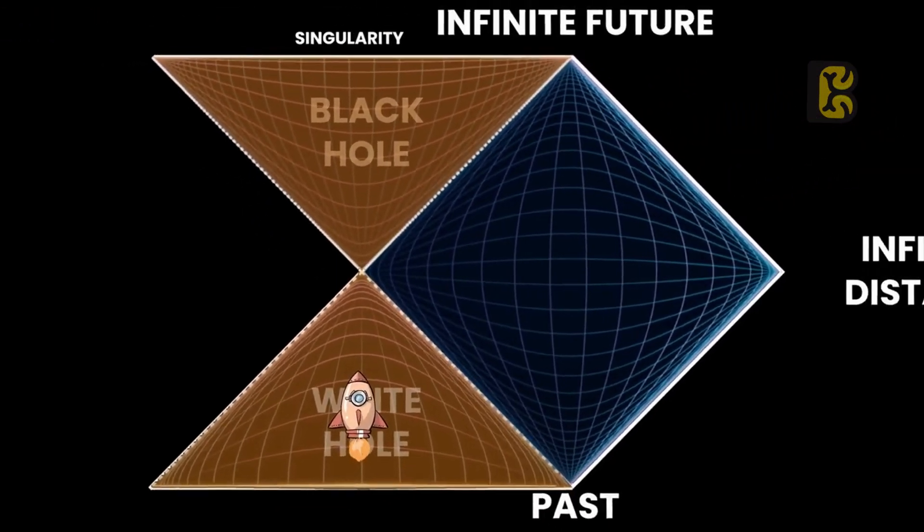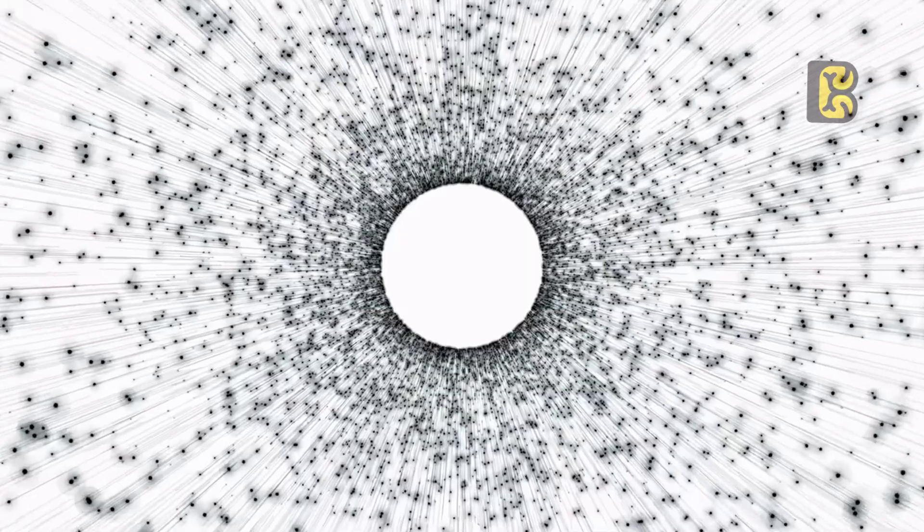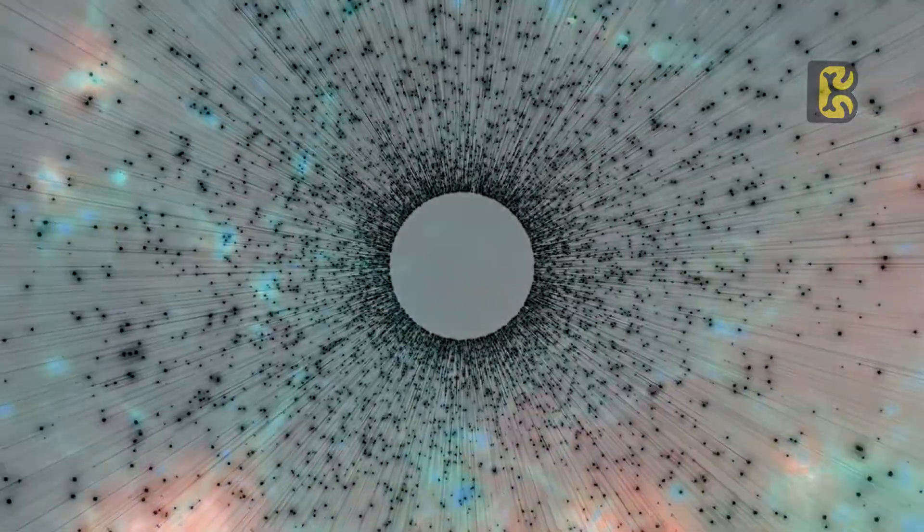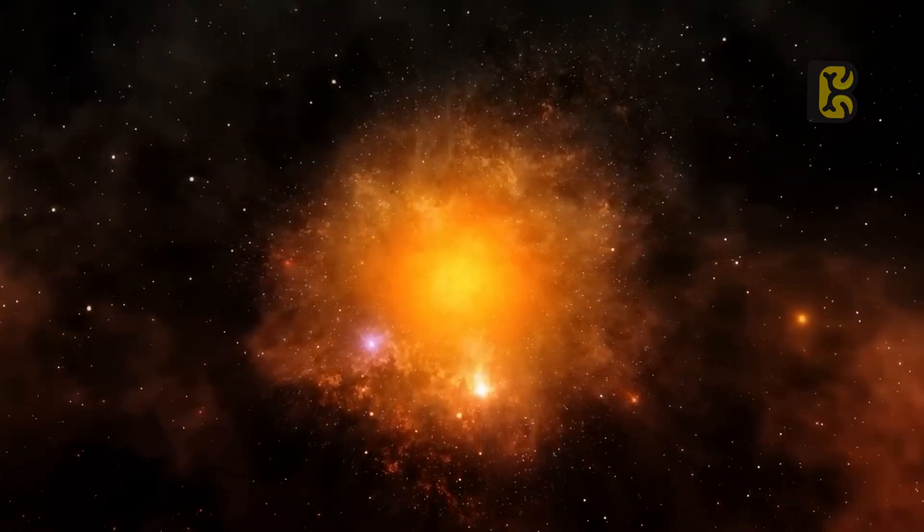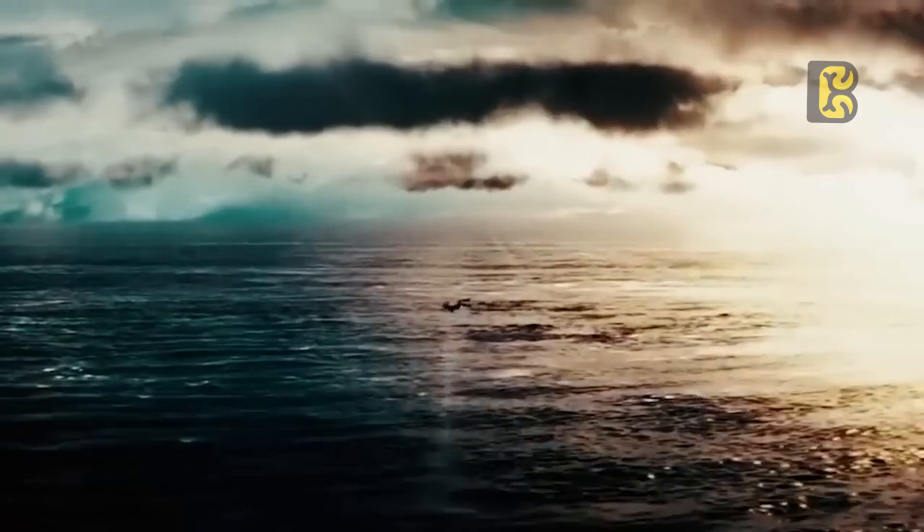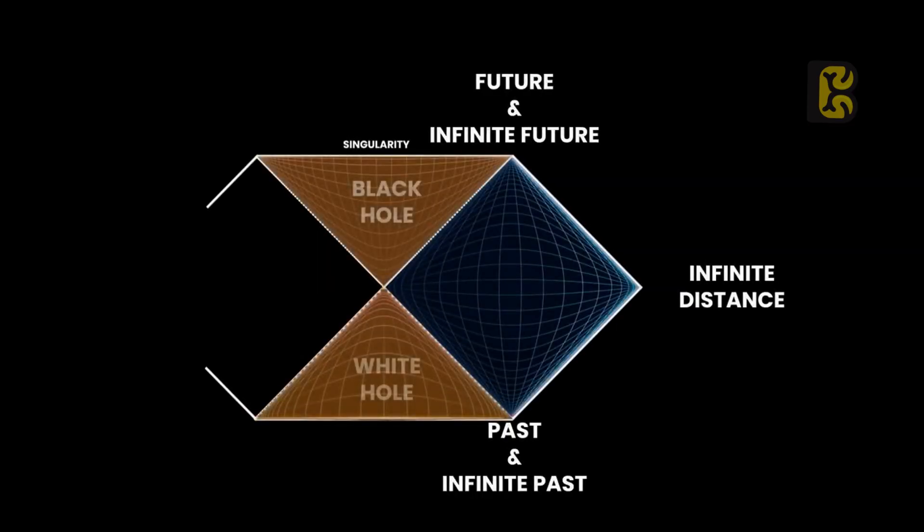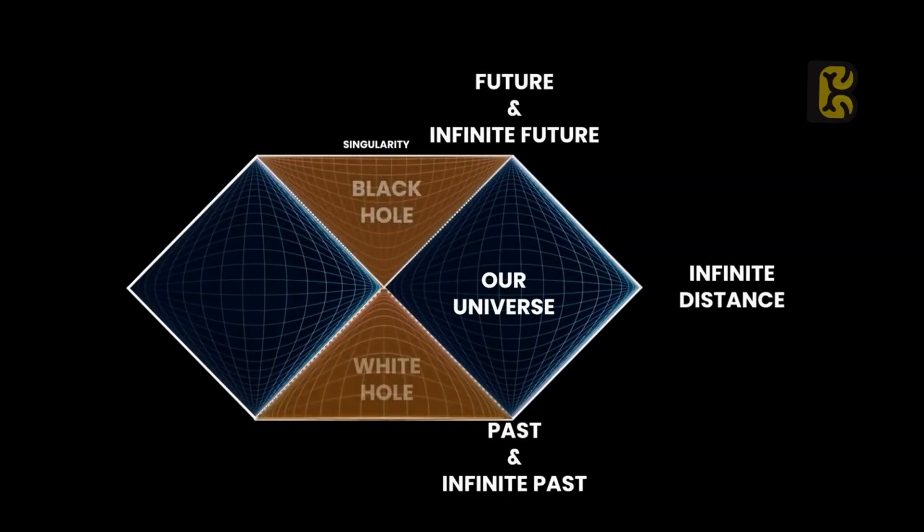However, once you reach a white hole, things change because the white hole ejects you somewhere in the universe. One option is your own universe, but no one knows in which part or timeline of the universe you will end up after exiting the white hole. Additionally, there is a second option. You might enter a new, parallel universe, which is the opposite of our universe, where gravity repels instead of attracting. This parallel universe appears opposite to our real universe in the Penrose diagram.